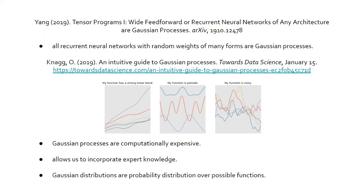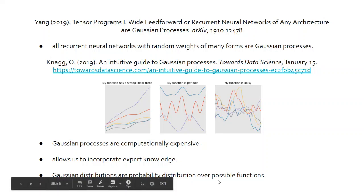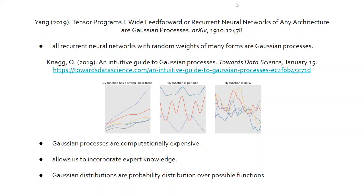You can use Gaussian processes to improve or boost your data analysis by contrasting a Gaussian process with the input data. Caveats include that Gaussian processes are computationally expensive; they allow incorporation of expert knowledge in a network; and they are defined as probability distributions over possible functions.